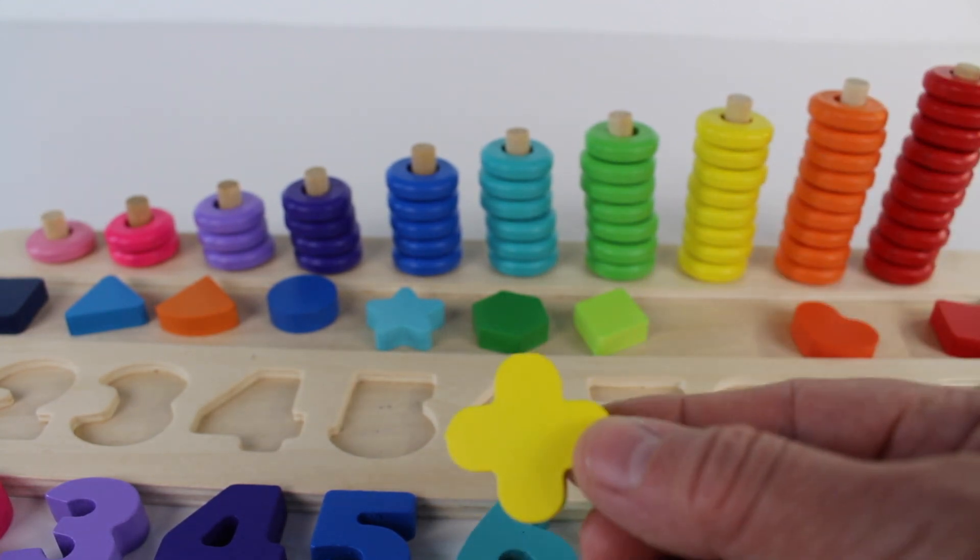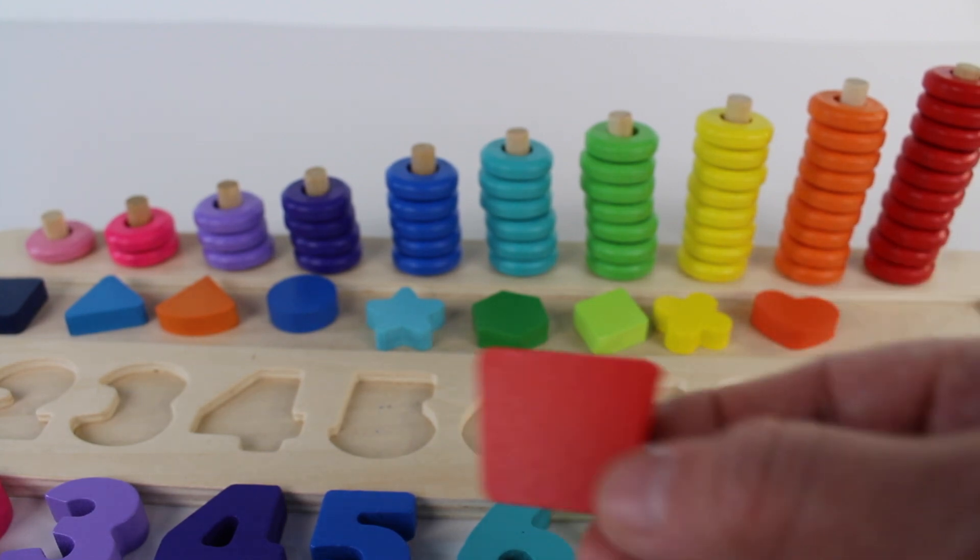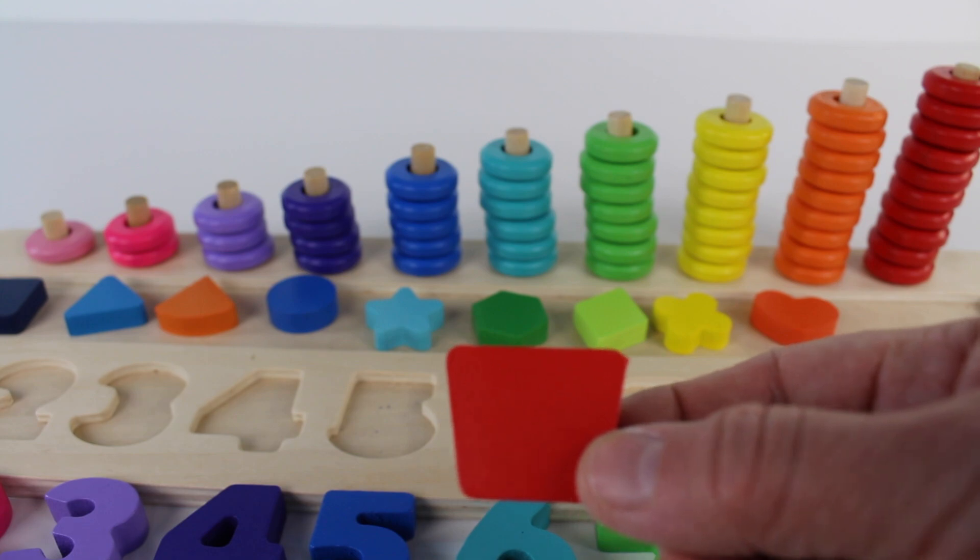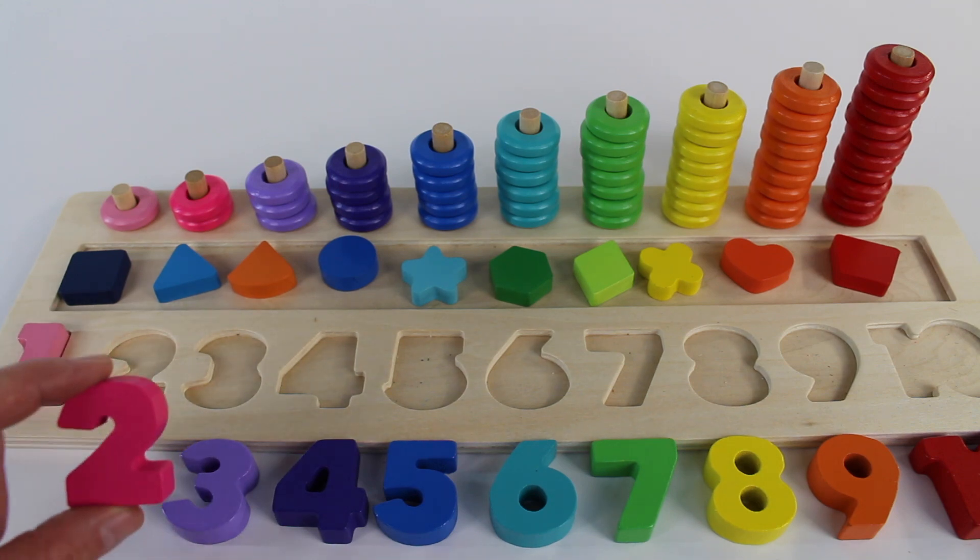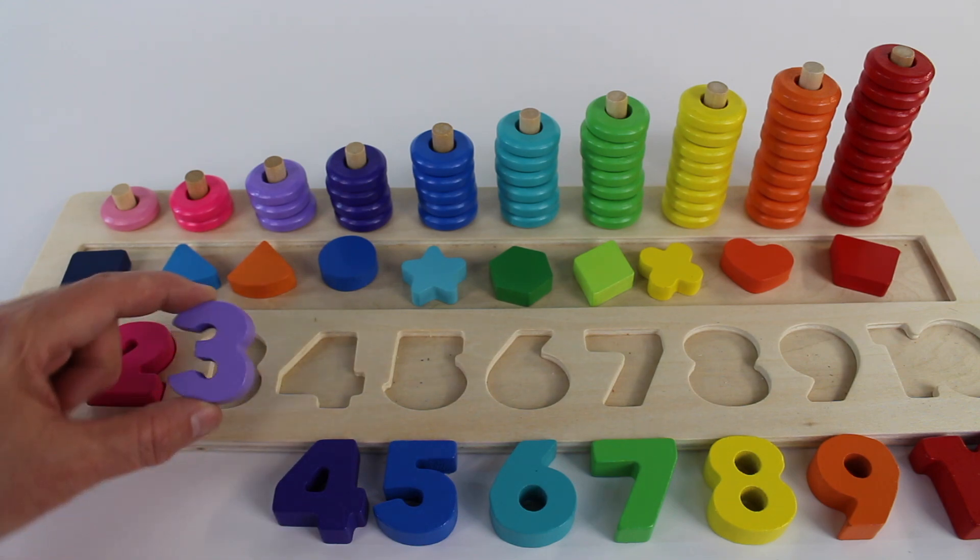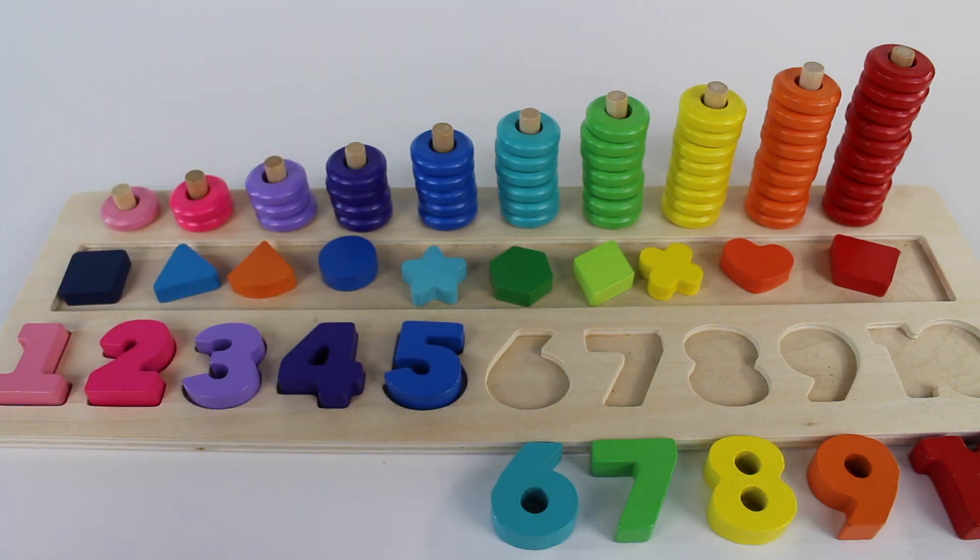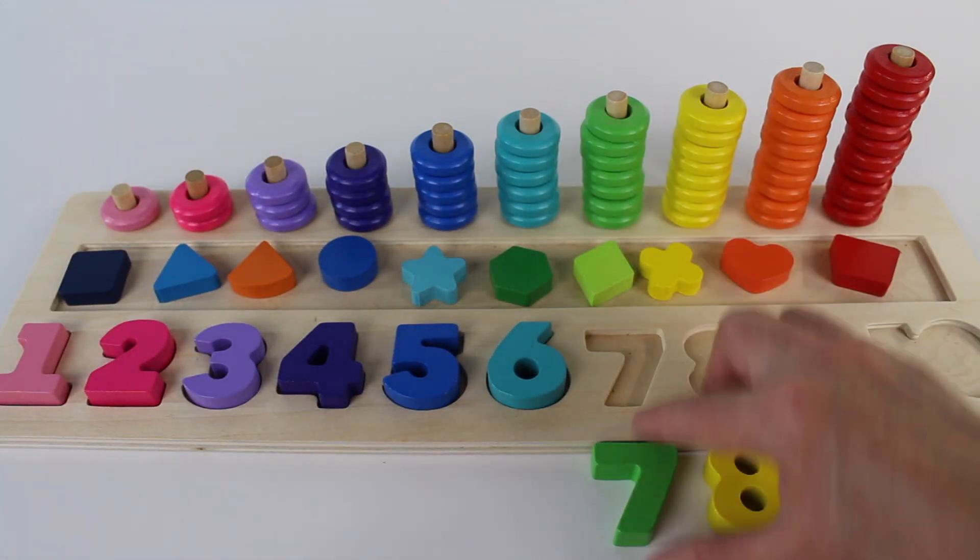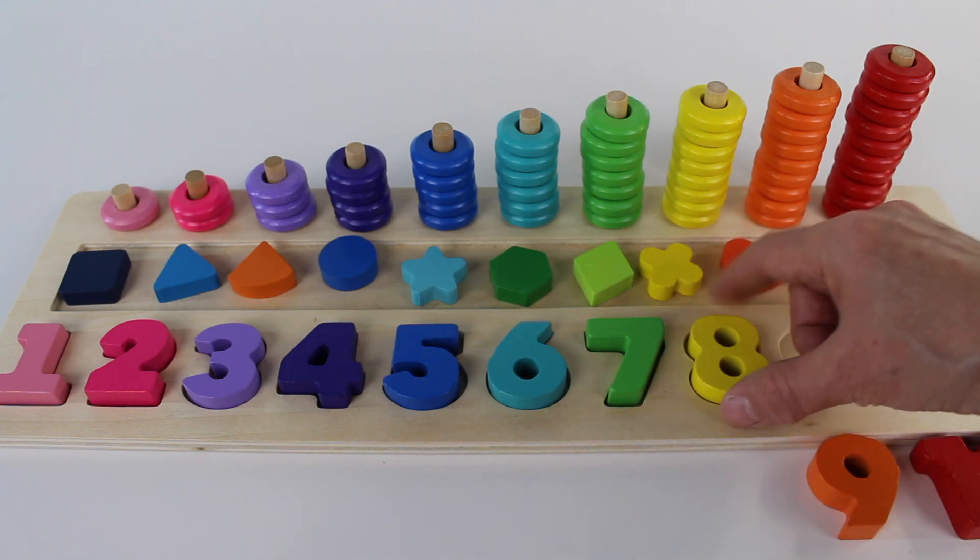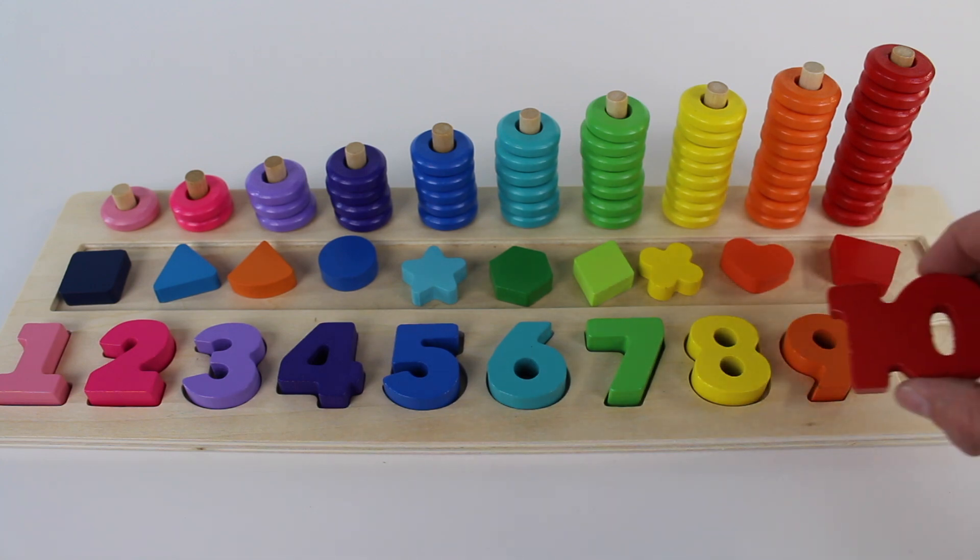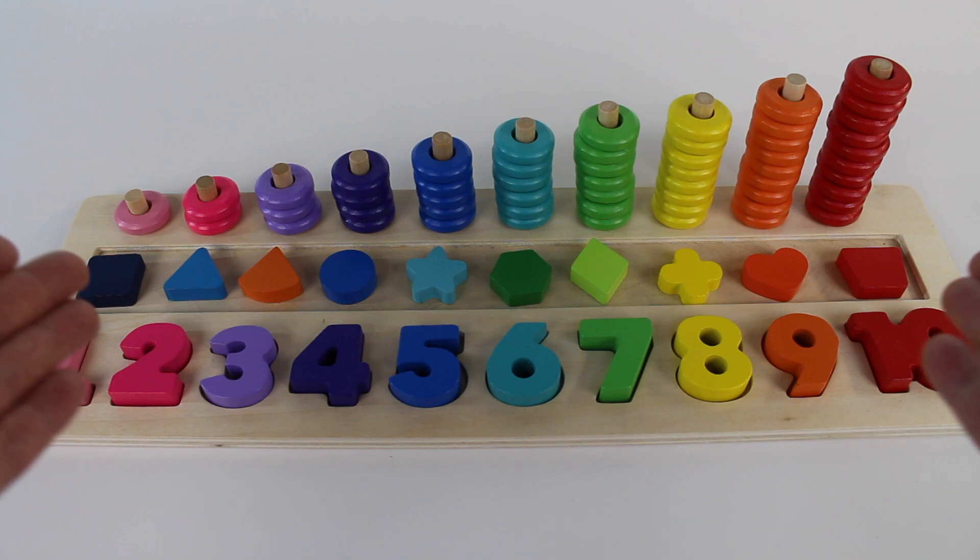This one looks like a plus sign. Here is a heart, and this is a trapezoid. Let's count numbers again. One, two, three, four, five, whoopsie, six, seven, you can do it, eight, nine, ten. Thanks for helping me learn numbers, counting, and shapes today. See my next video, bye!